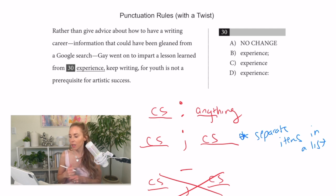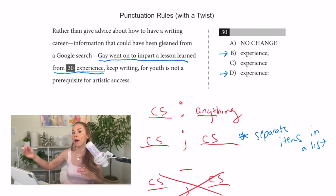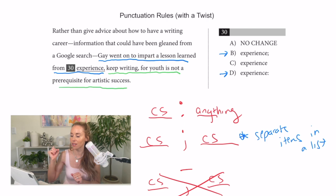But here's the twist on this problem. We have a complete sentence. It says Gay went on to impart lesson learned from experience. Okay, so we could have the colon or the semicolon work. But the thing is, you want to know the difference between a colon and a semicolon and how they function. A colon is used to then explain more about the statement that was just made. Now notice that the second part, keep writing for youth is not a prerequisite for artistic success, is explaining more about the lesson that he imparted from experience. So we're better off picking D than B.